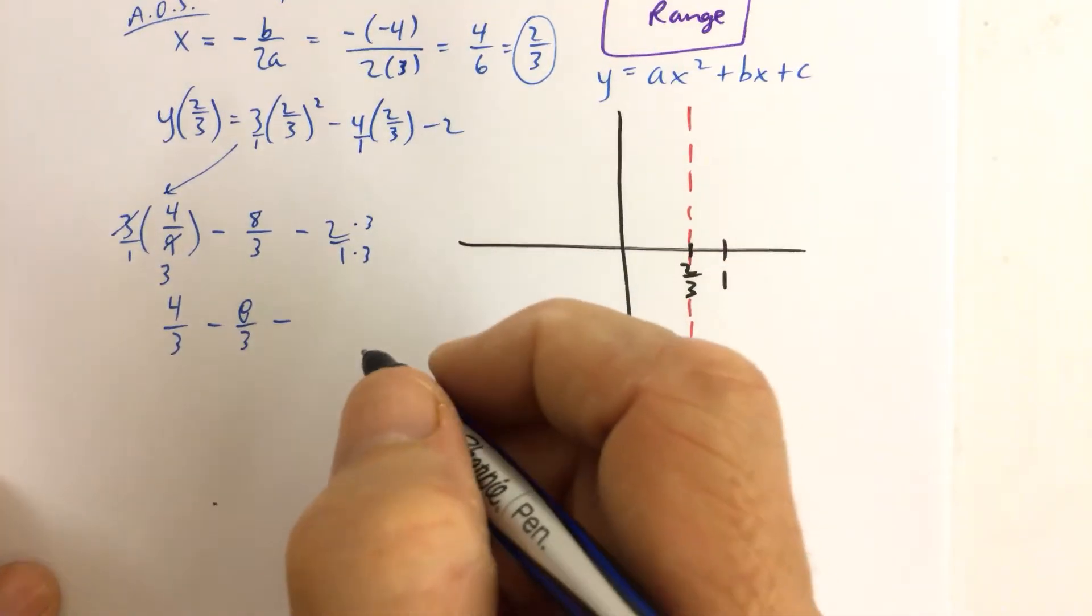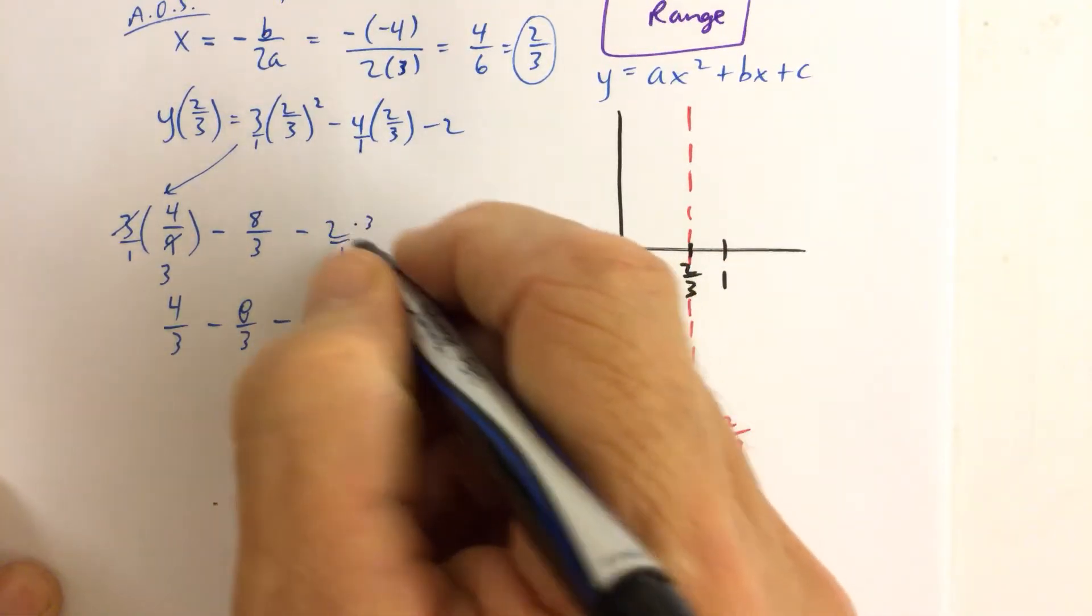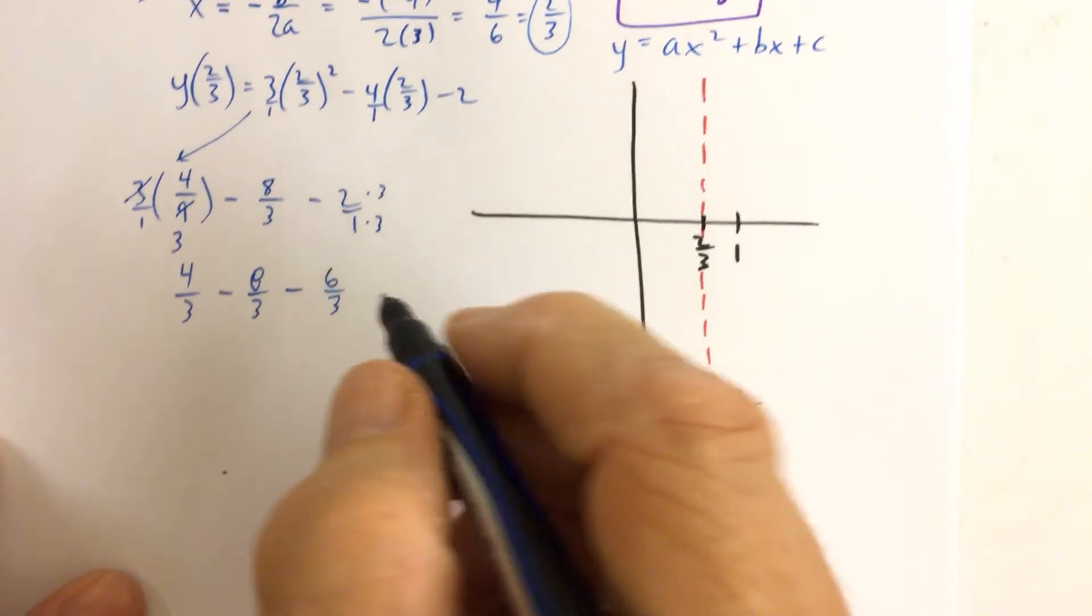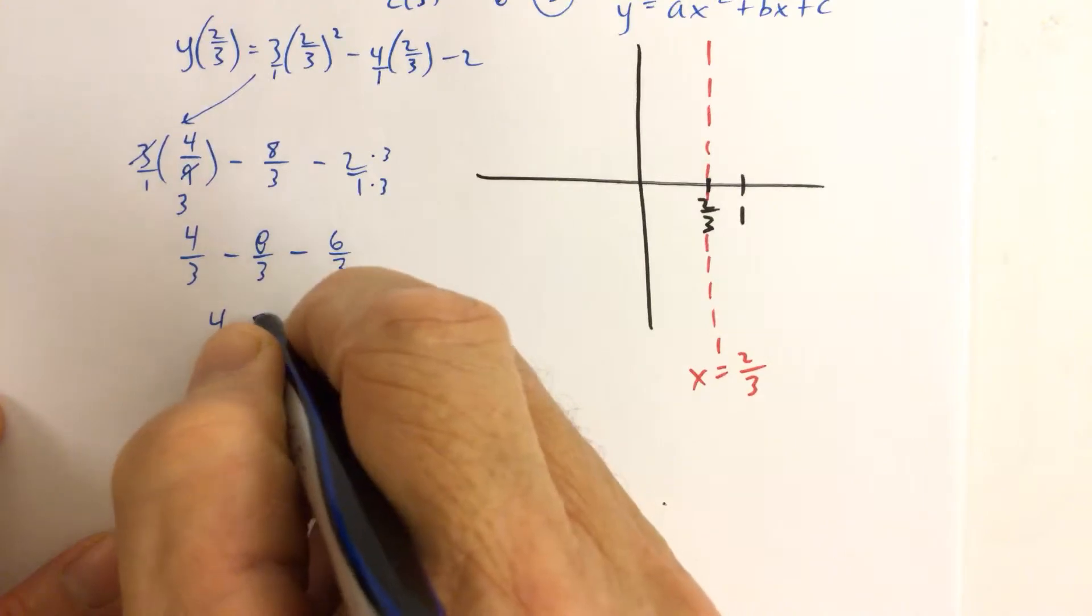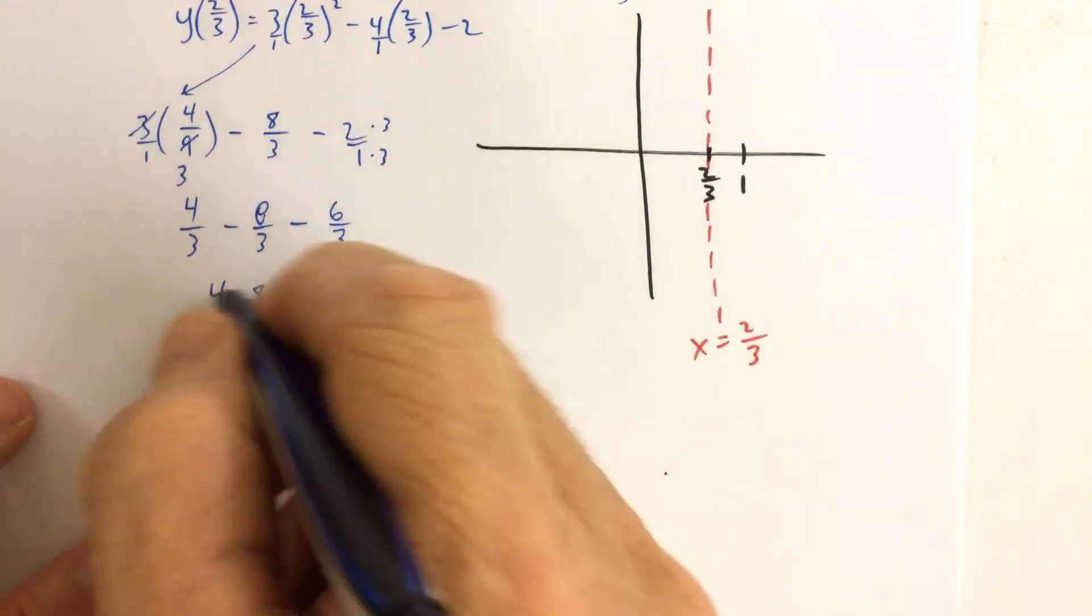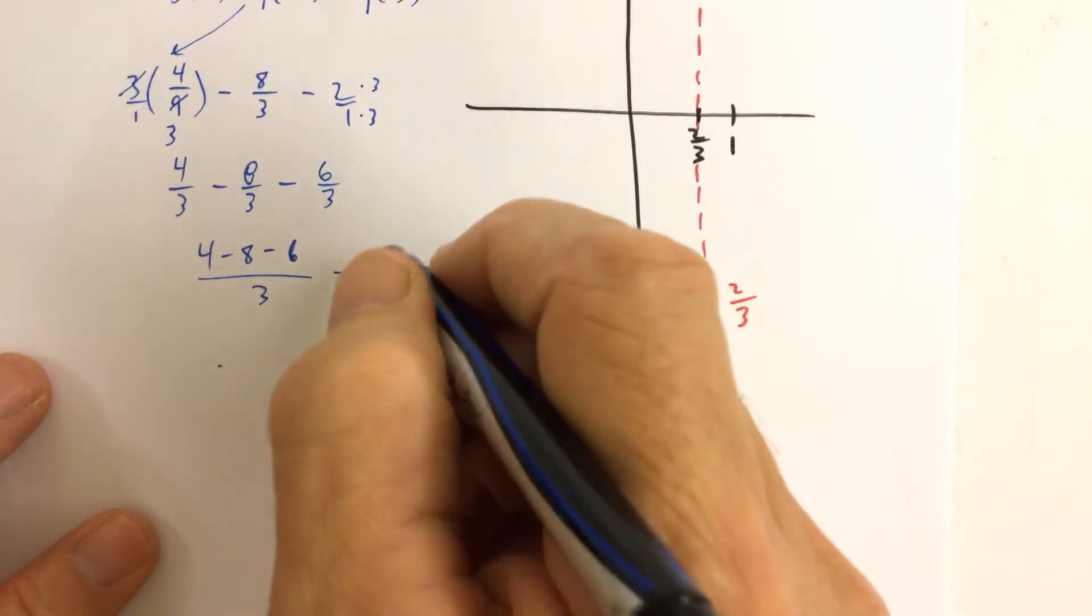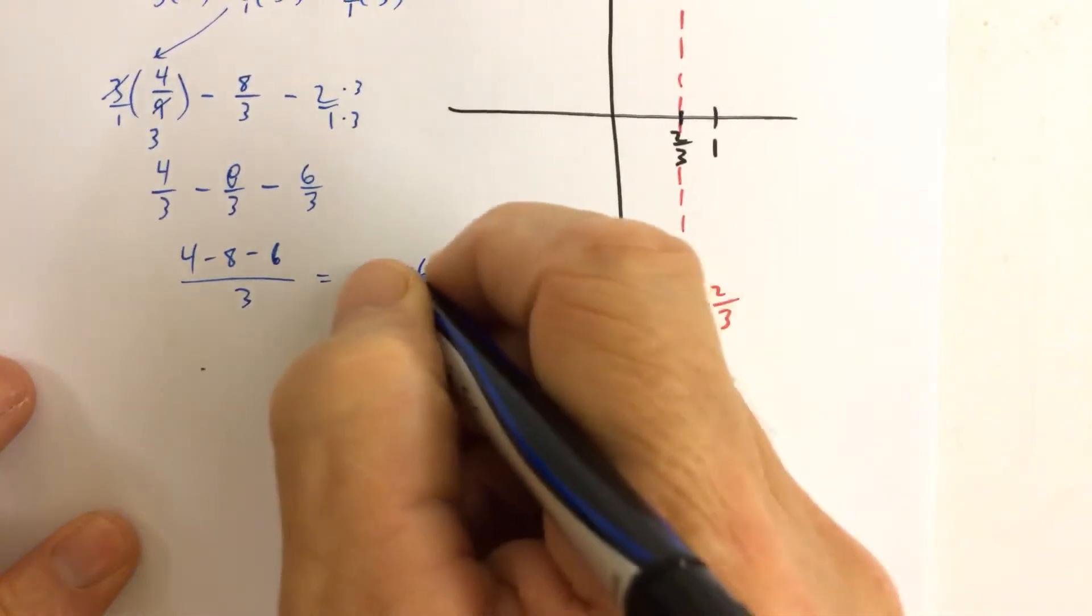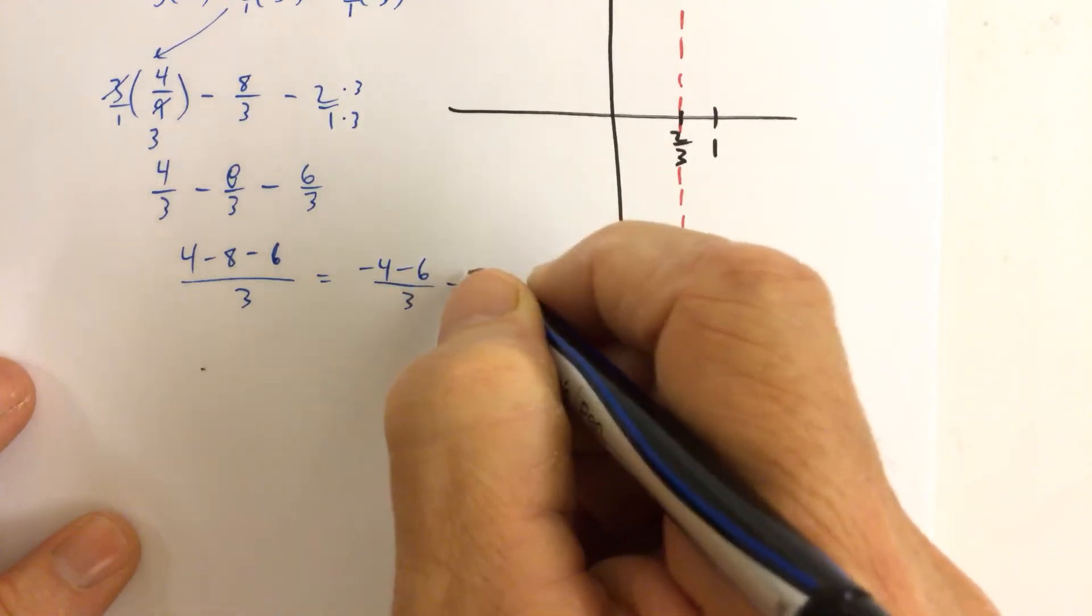If we multiply top and bottom by 3, because we have to get a common denominator if we're going to add or subtract fractions. So if we multiply top and bottom by 3, 2 can be rewritten as 6 thirds. So all we have to do is combine the numerators. 4 minus 8 minus 6 all over 3.